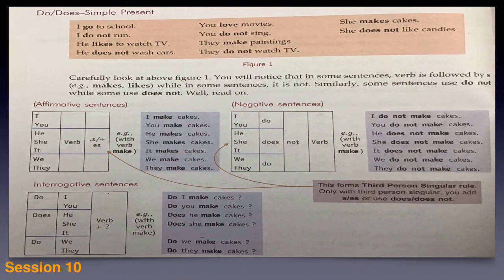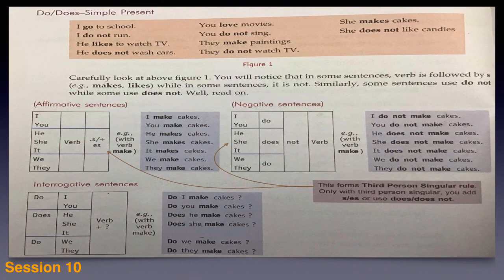Now the next one: interrogative sentences. Whenever there is questioning, we call them interrogative sentences. In these, do or does is brought to the front — just as previously we moved is, am, are to the front in place of the subject. For first and second person, 'do' is used at the front. For third person singular number, 'does' is used. For first person plural, third person plural, 'do' is used.